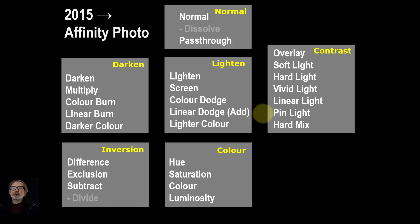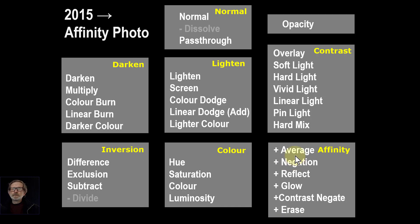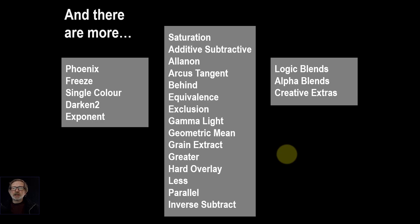In 2015 Affinity Photo turns up, and it does all of this apart from dissolve and divide — and you don't really miss those, you can sort of fudge them. Affinity also adds a whole bunch of other ones, which again are not used too much, but we'll get to them. Then there's opacity, which is the transparency of the top layer and is actually quite useful — it's effectively a blend mode in itself. There are also a whole ton of extras which haven't appeared in the mainstream ones — they're in some other odd products, papers, academic things and so on.